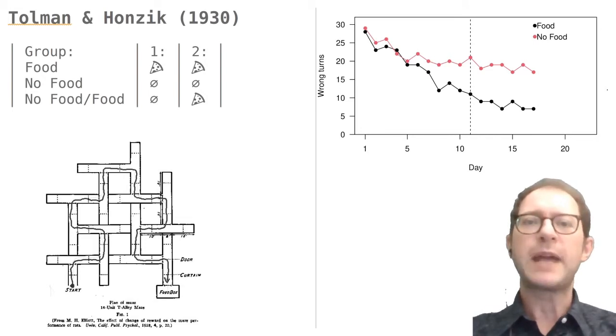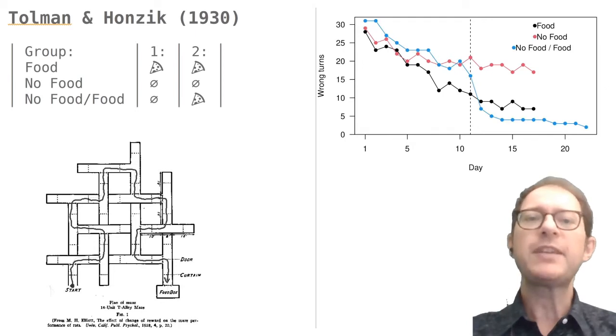The third group of rats is the most interesting one. These rats explored the maze without any food reward for 10 days, after which they could find food at the end. And here is what the rats in this group did, displayed as the blue line.